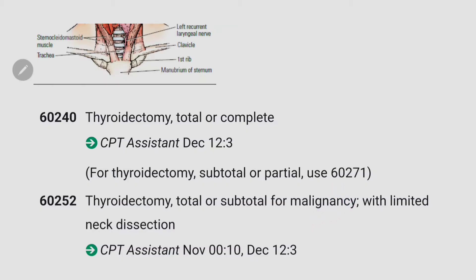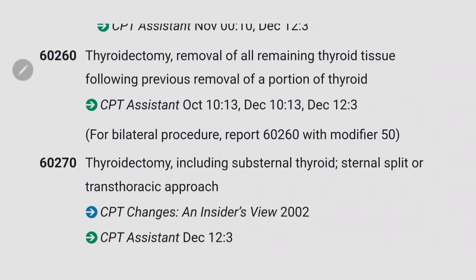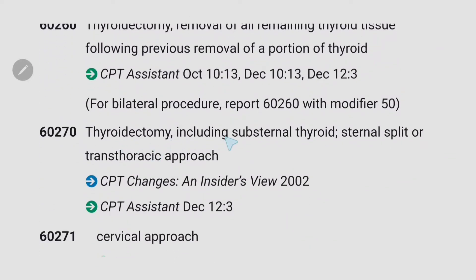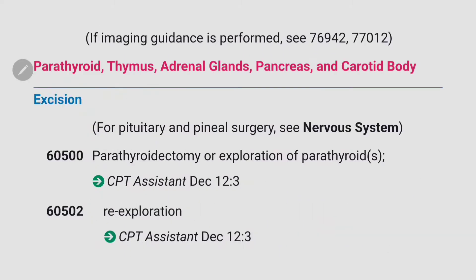You have to check in the scenario what they have mentioned - thyroidectomy total, or total thyroid lobectomy - those are the key terms. Code 60260 is for thyroidectomy, removal of all remaining thyroid tissue following previous removal of a portion of thyroid. Code 60270 is for thyroidectomy including substernal thyroid, sternal split or transthoracic approach, and 60271 is for cervical approach. Code 60300 is for aspiration or injection of thyroid cyst. There are also excision codes for parathyroid, thymus, adrenal glands, pancreas, and carotid body.